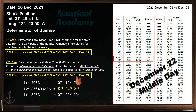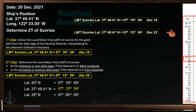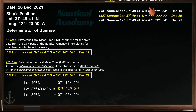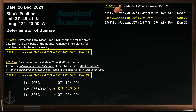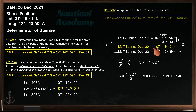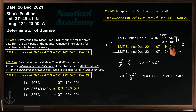We now have the local mean time of sunrise on 19th and 22nd of December. However, we are looking for the time of sunrise on 20th of December. Our third step is to interpolate the local mean time of sunrise on the 20th of December. If you do it manually, the setup has dates on the left and the corresponding time of sunrise on the right. The local mean time of sunrise on 20th of December is 07 hours 11 minutes 3.4 seconds.